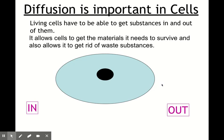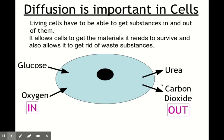To summarize: living cells need to get substances in and out across the cell membrane, and they use diffusion to do this. Diffusion allows cells to get the materials they need to survive — for example glucose and oxygen — and also allows them to get rid of waste substances like carbon dioxide, which we breathe out, and urea, a component of urine produced by cells.